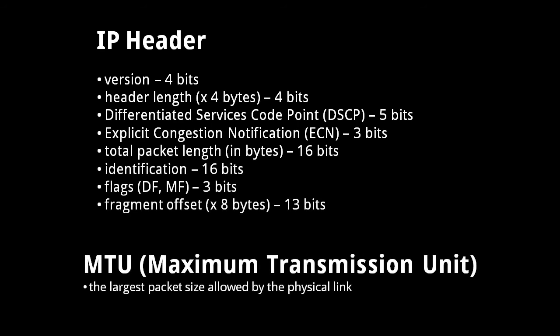After this, we have three fields that concern what is called the MTU, the Maximum Transmission Unit. The different networks that comprise the Internet may use different link layers, and different link layers may allow for different maximum size packets. For example, one network might allow for 512-byte packets, but another might allow for 1024-byte packets. For a packet to be sent across a network with an MTU smaller than the packet, the packet must be fragmented into smaller packets.